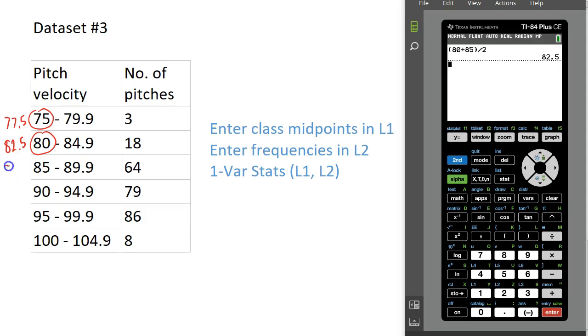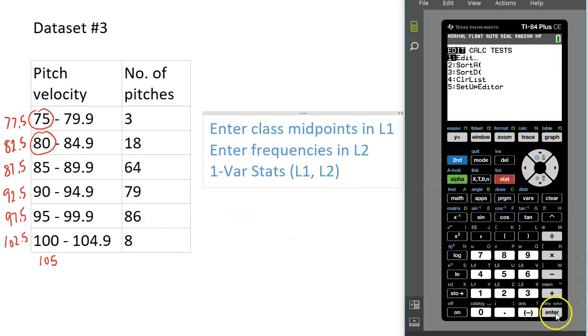Halfway between 85 and 90 would be 87.5. Halfway between 90 and 95 would be 92.5. Halfway between 95 and 100 would be 97.5. For this last class, we would go halfway between 100 and 105, which is 102.5. So we use class midpoints, and I'm going to enter these class midpoints in List 1.